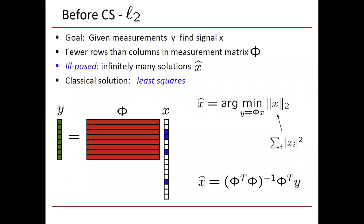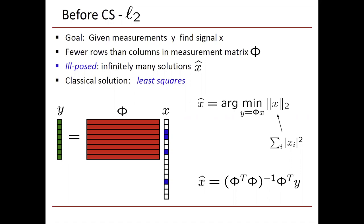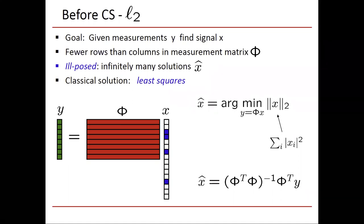Before compressed sensing, in a different era, there was L2. The goal was: given measurements y, we want to find a signal x. x is a vector where the blue boxes represent a small number of large coefficients and most boxes are white — small coefficients. We multiply x by a matrix φ, resulting in measurements y equals φx. Overall, there are fewer rows than columns in the measurement matrix φ, and because of that, this is an ill-posed problem. There are infinitely many x-hats such that y equals φ times x-hat. However, many of those x-hats are not sparse, and we know that x happens to be sparse — that will turn out to be the key to the solution, utilizing the sparsity information in the reconstruction procedure.